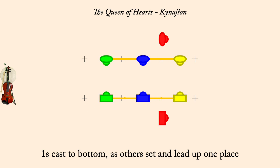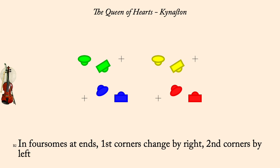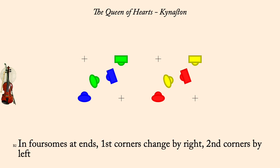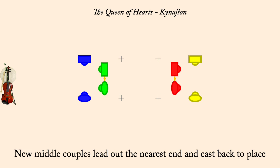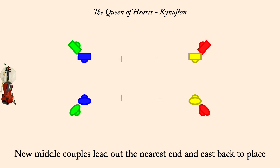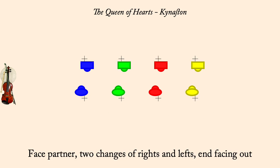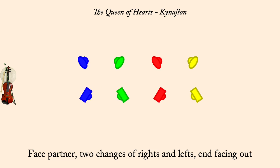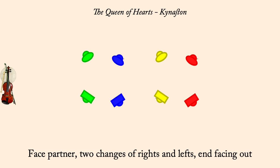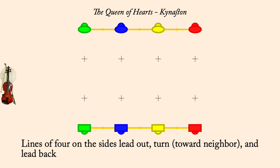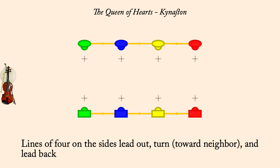First corners change by right, second by left. Second corners change by right, second by left. New middles lead out nearest end and cast back. Two changes of rights and lefts, end facing out. Lines of four lead out, turn, lead back. New middles lead out nearest end and cast back.